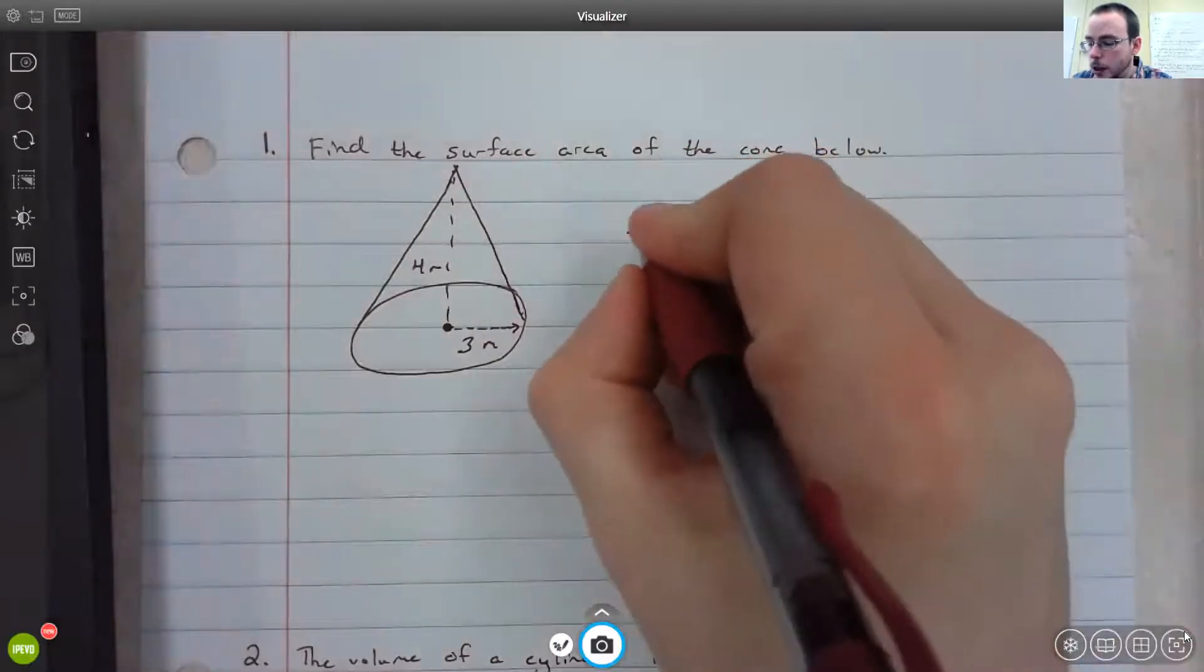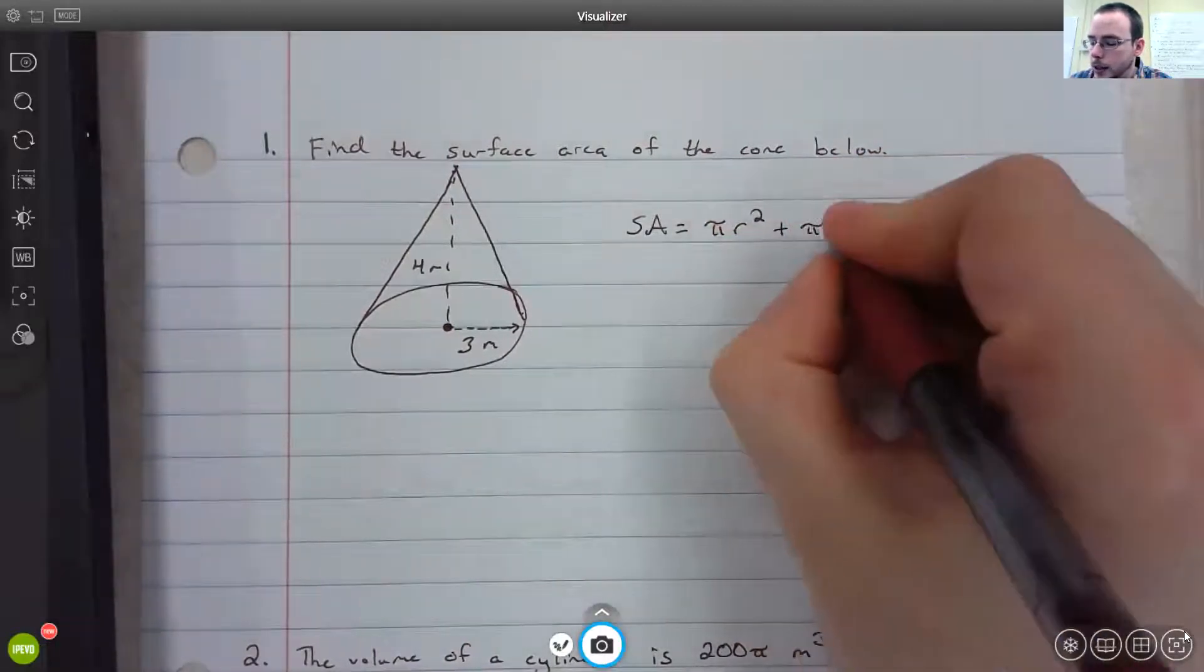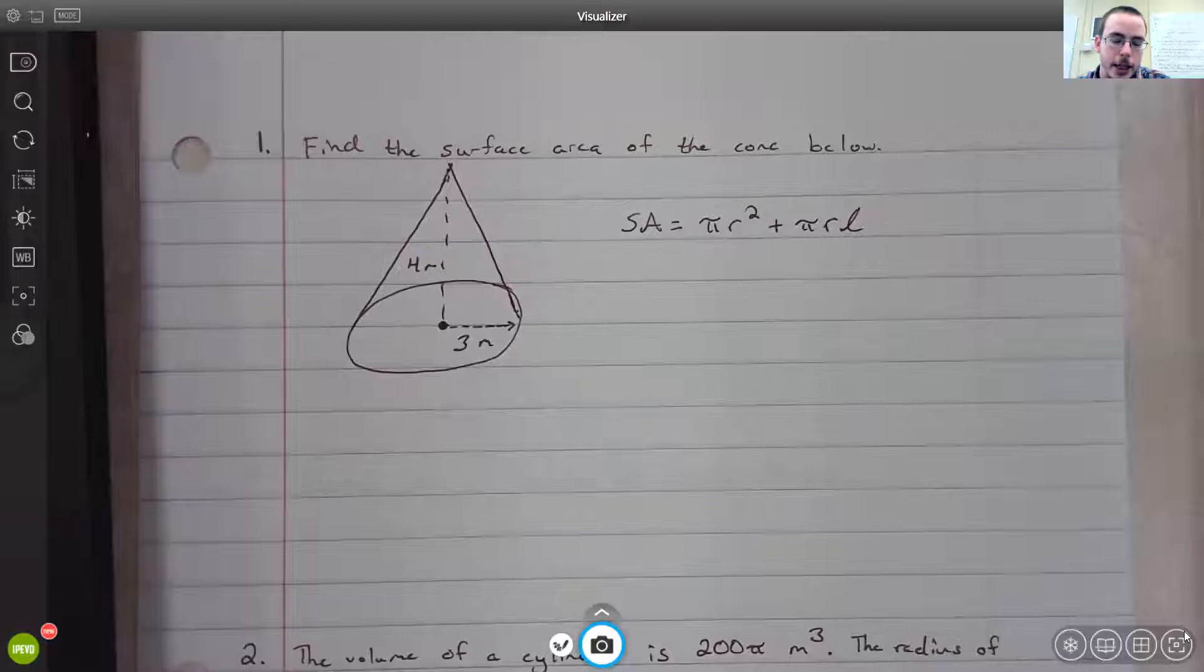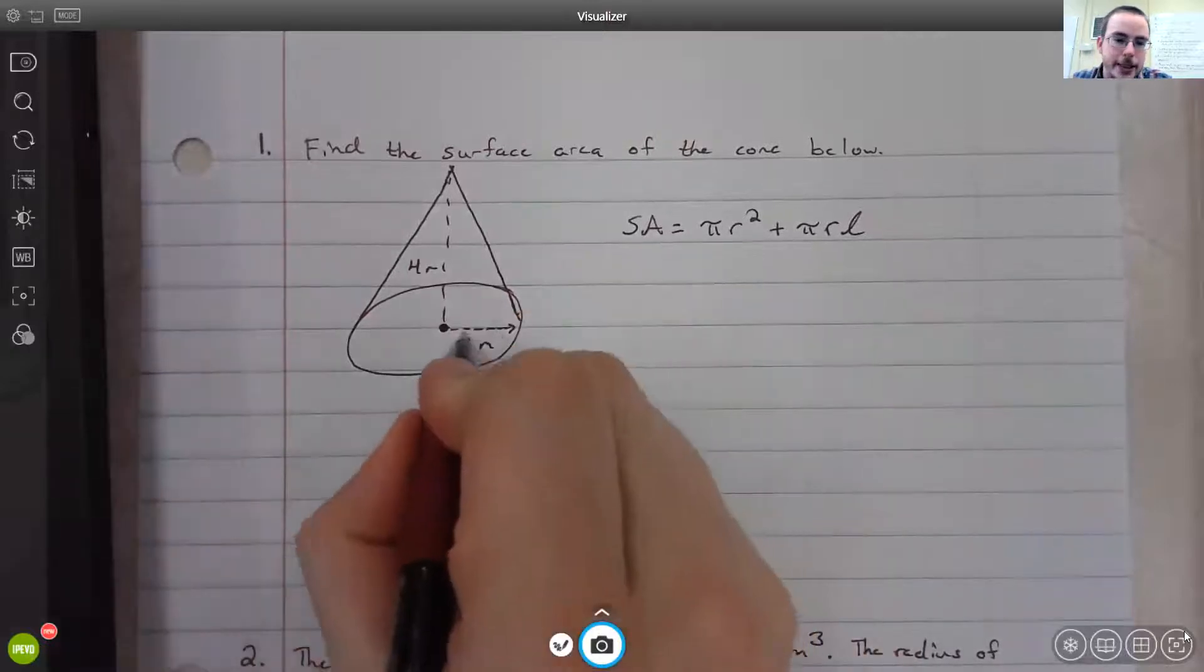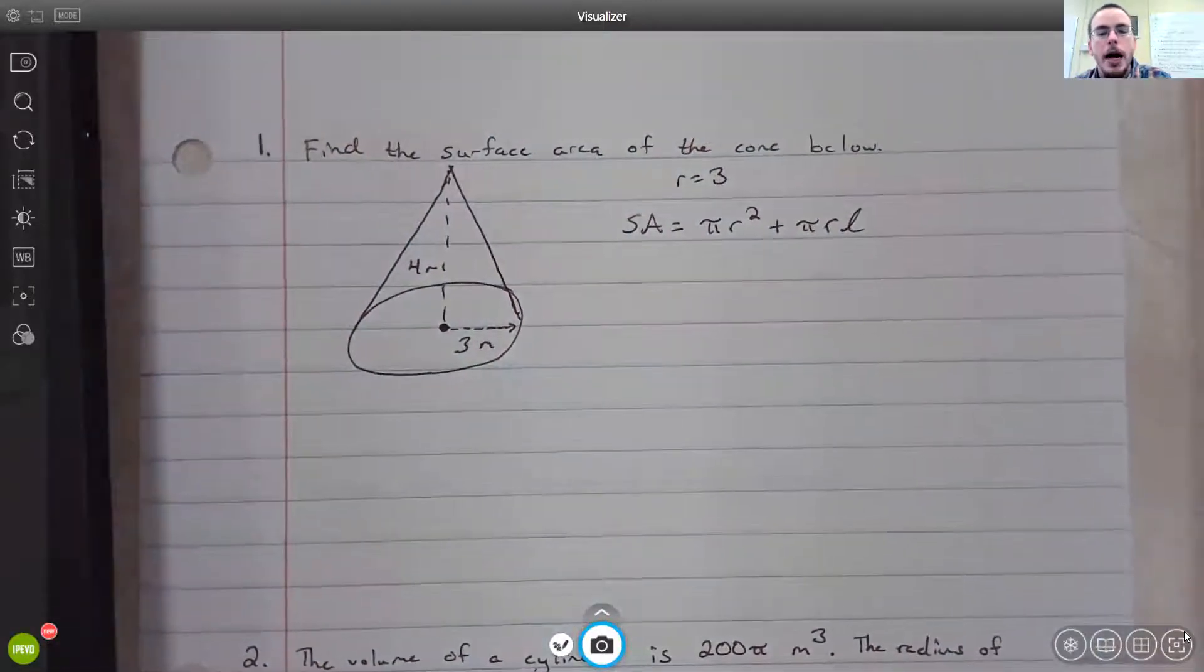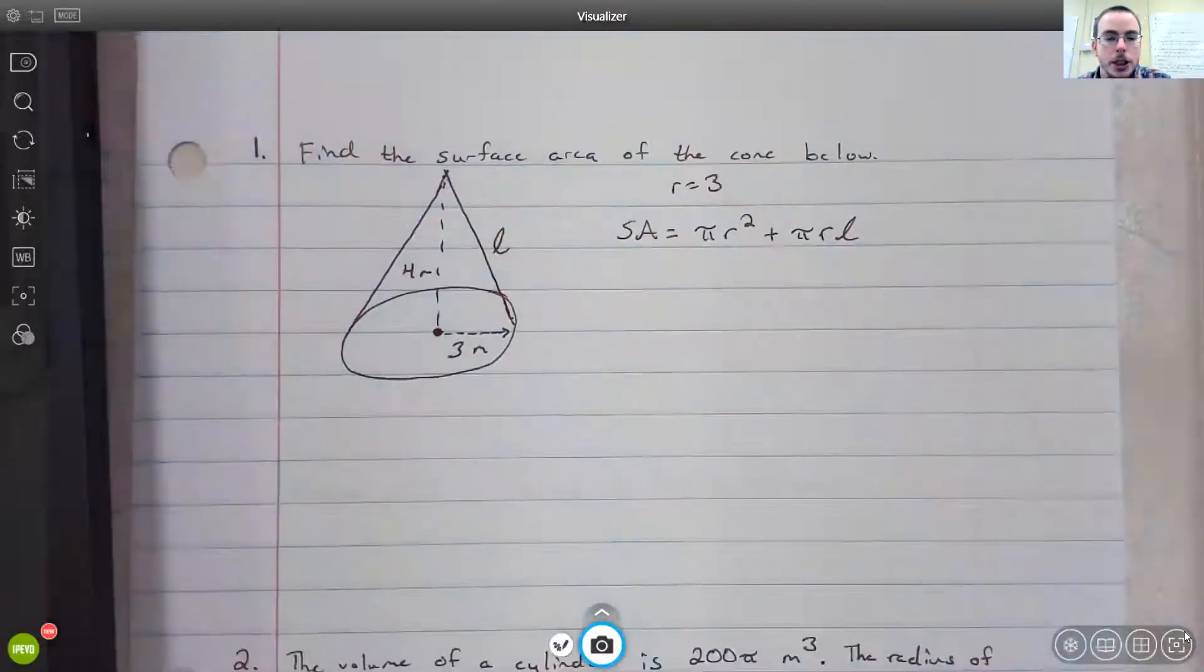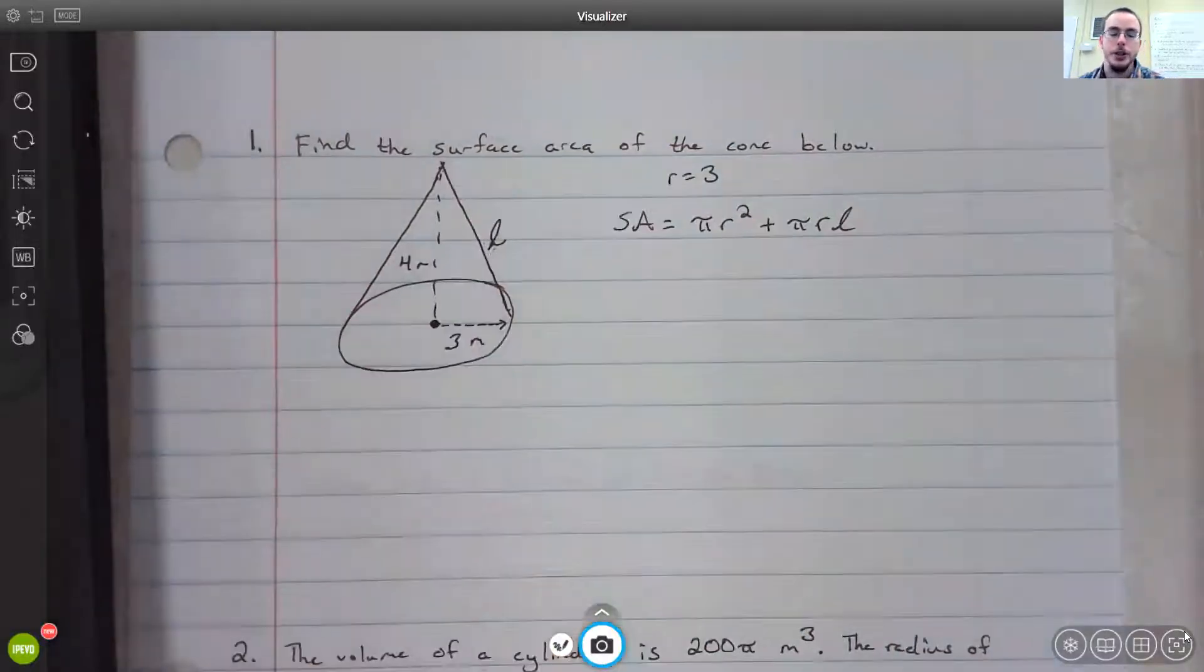For this cone, we want to find the surface area. If you look at our surface area formula, the surface area is equal to π r² plus π r l, where l is the slant length and r is the radius. If we look at this cone, we can tell that the radius is equal to 3, so r equals 3. However, do we know what our slant length is? We know what the height is, but we don't know what the slant length is.